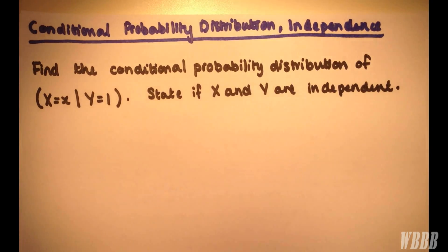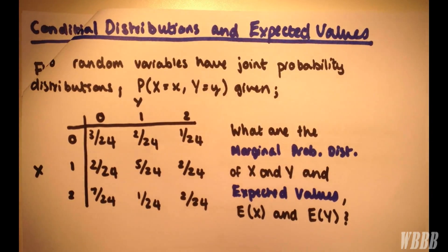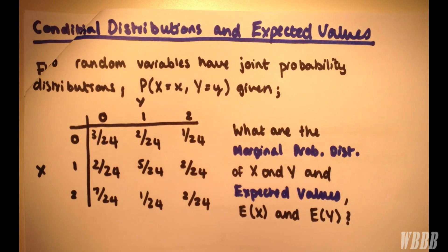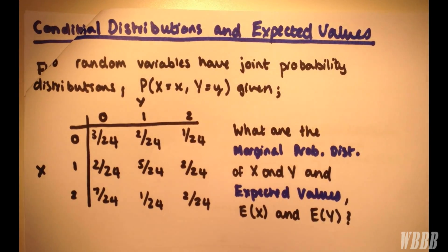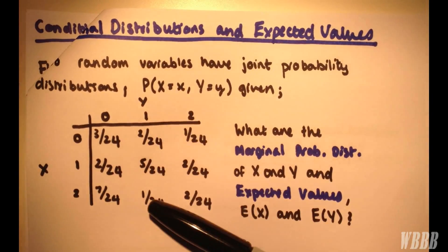in our previous example we have this probability distribution here. Now, when we're considering all values of X and Y equals 1,